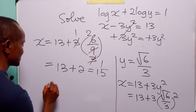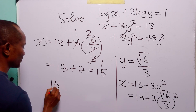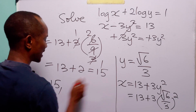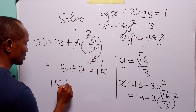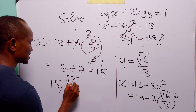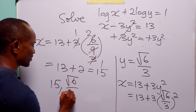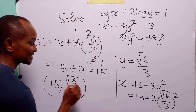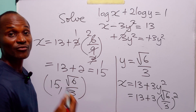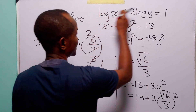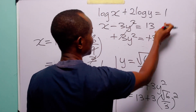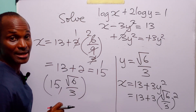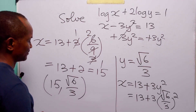So we have that x is equal to 15 and y is equal to root 6 over 3, and these are the values of x and y that satisfy these two equations simultaneously.